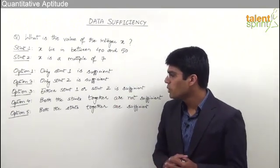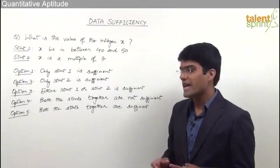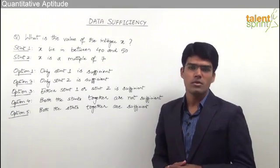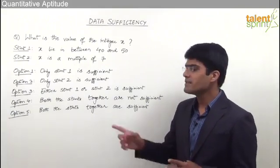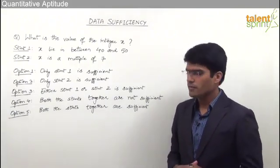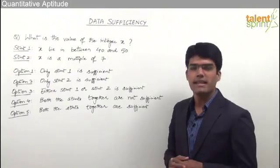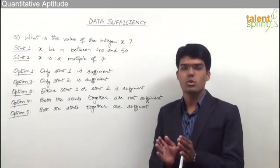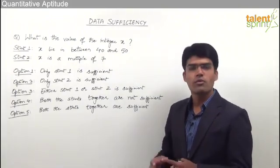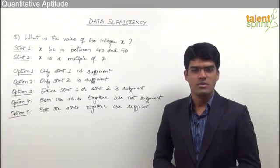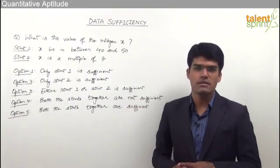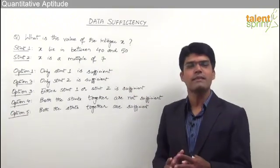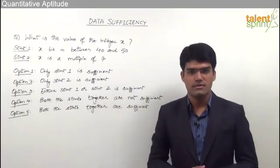Option four: both statements together are not sufficient — even if we use both statements together we will not be able to get the answer, so in such cases we mark the answer as option four. Option five: both statements together are sufficient — when both statements together can help us find out the answer, we go for option five. These are the five typical options given for a data sufficiency question.